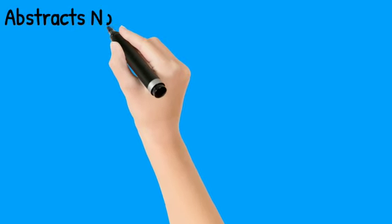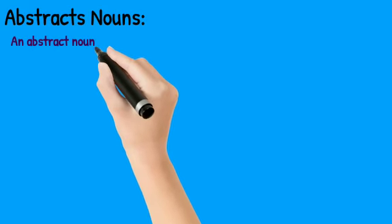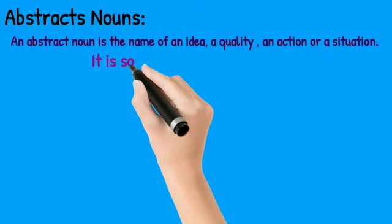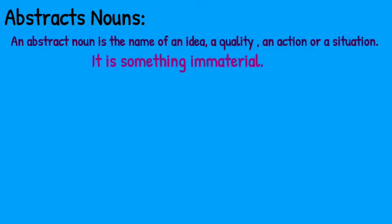Now let us move to the abstract nouns. An abstract noun is the name of an idea, a quality, an action or a situation. It refers to something immaterial that cannot be seen or touched.